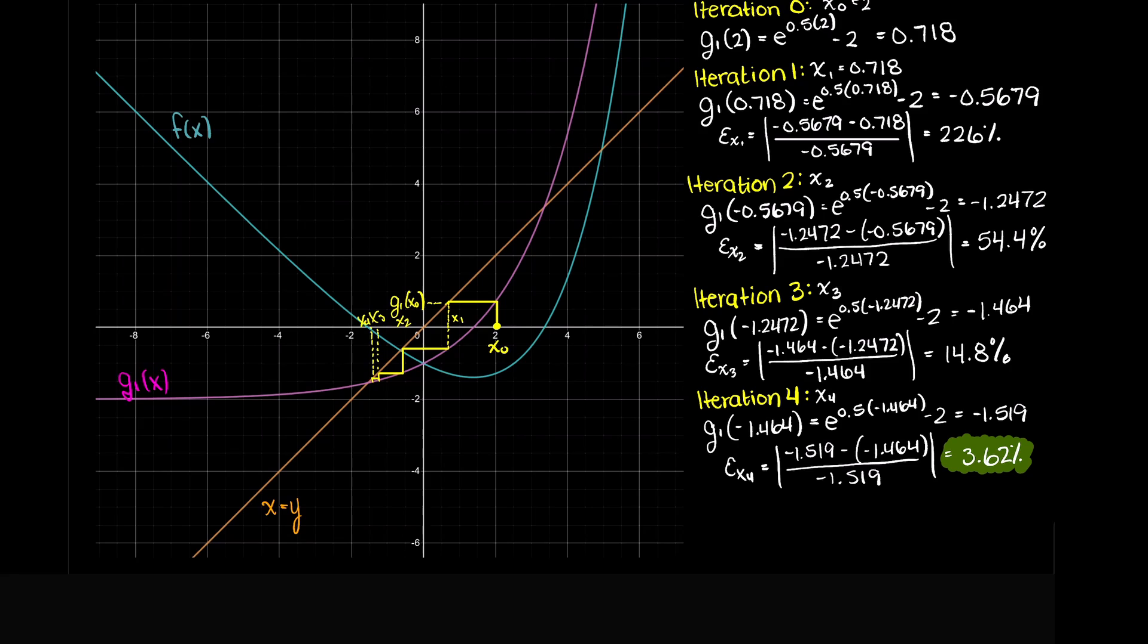Therefore, we can formally state that the root of the function f is at minus 1.519 with a 3.62% error. I hope that this video helped your understanding of how to solve for the root of a function using the fixed point method.